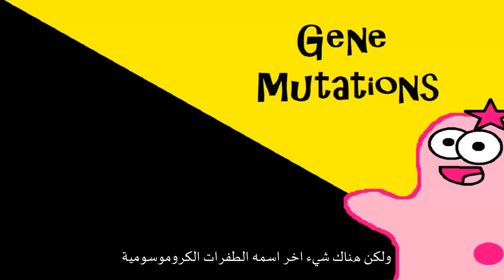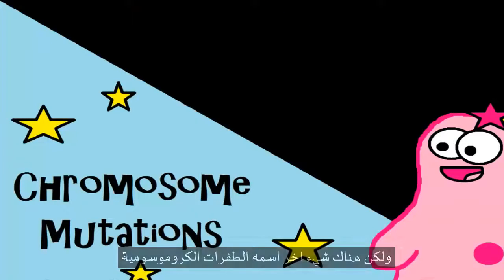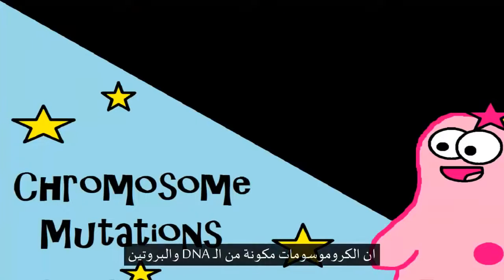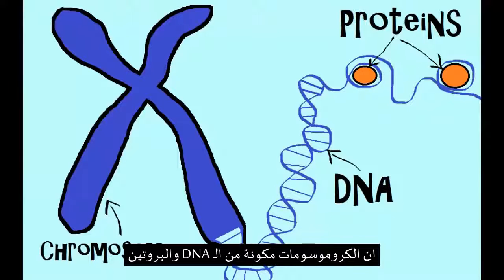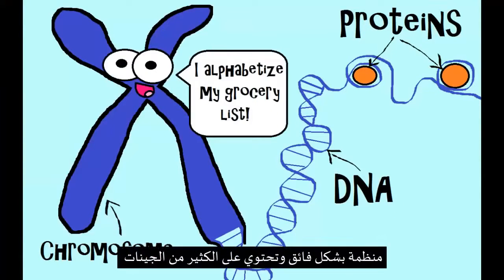We also have something called chromosome mutations. Remember that chromosomes are made up of DNA and protein — they're highly organized and have a lot of genes on them.